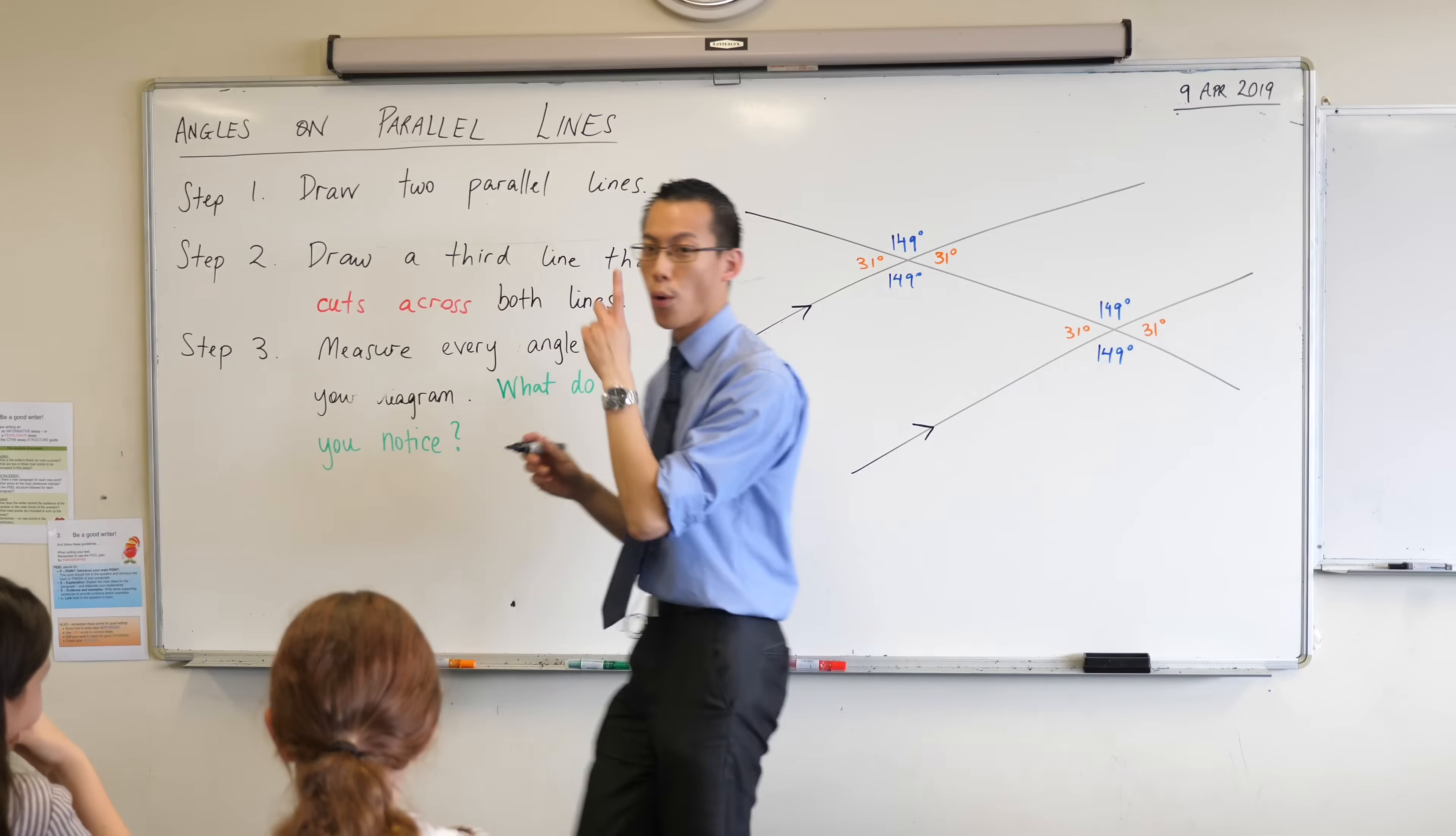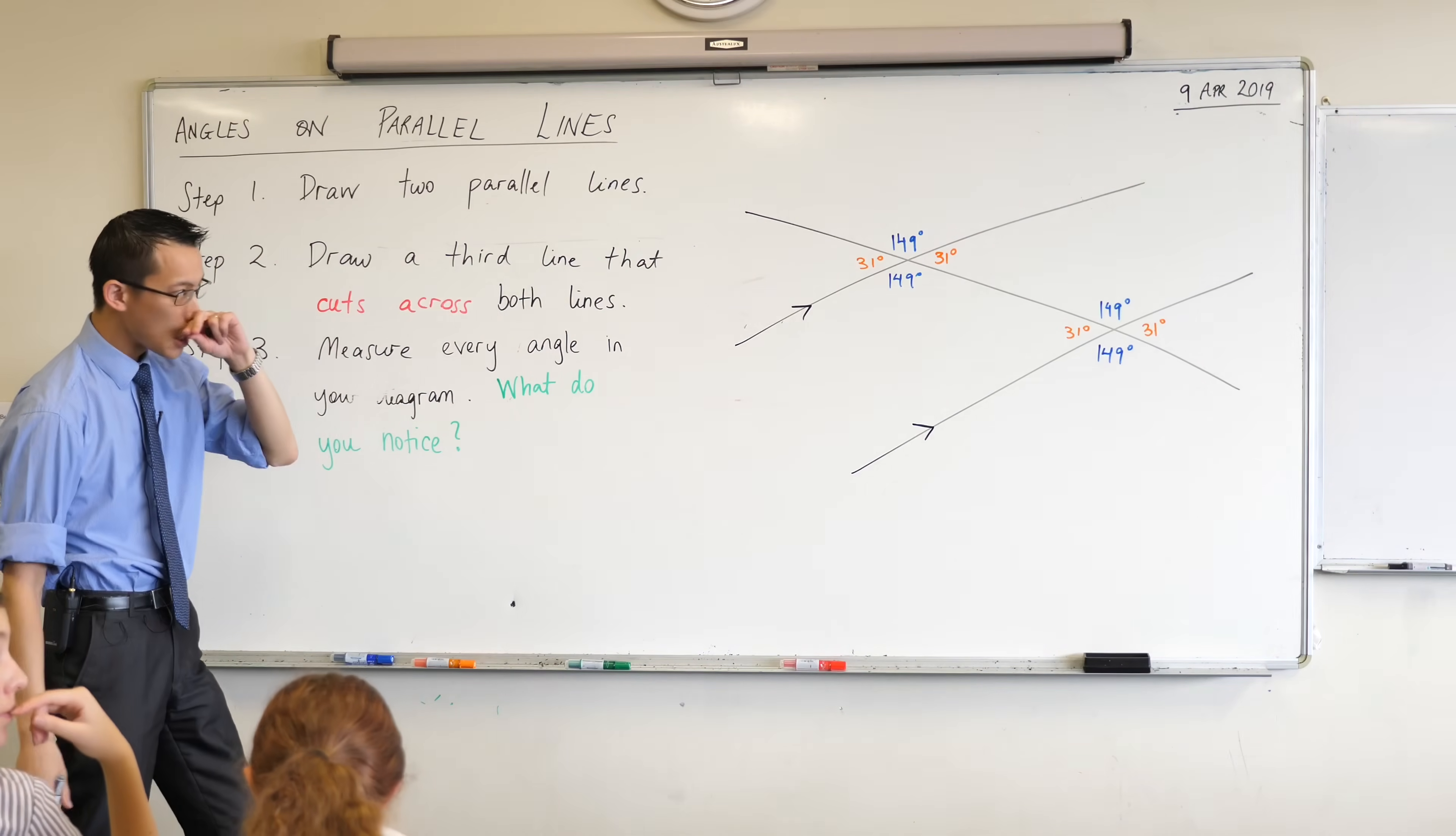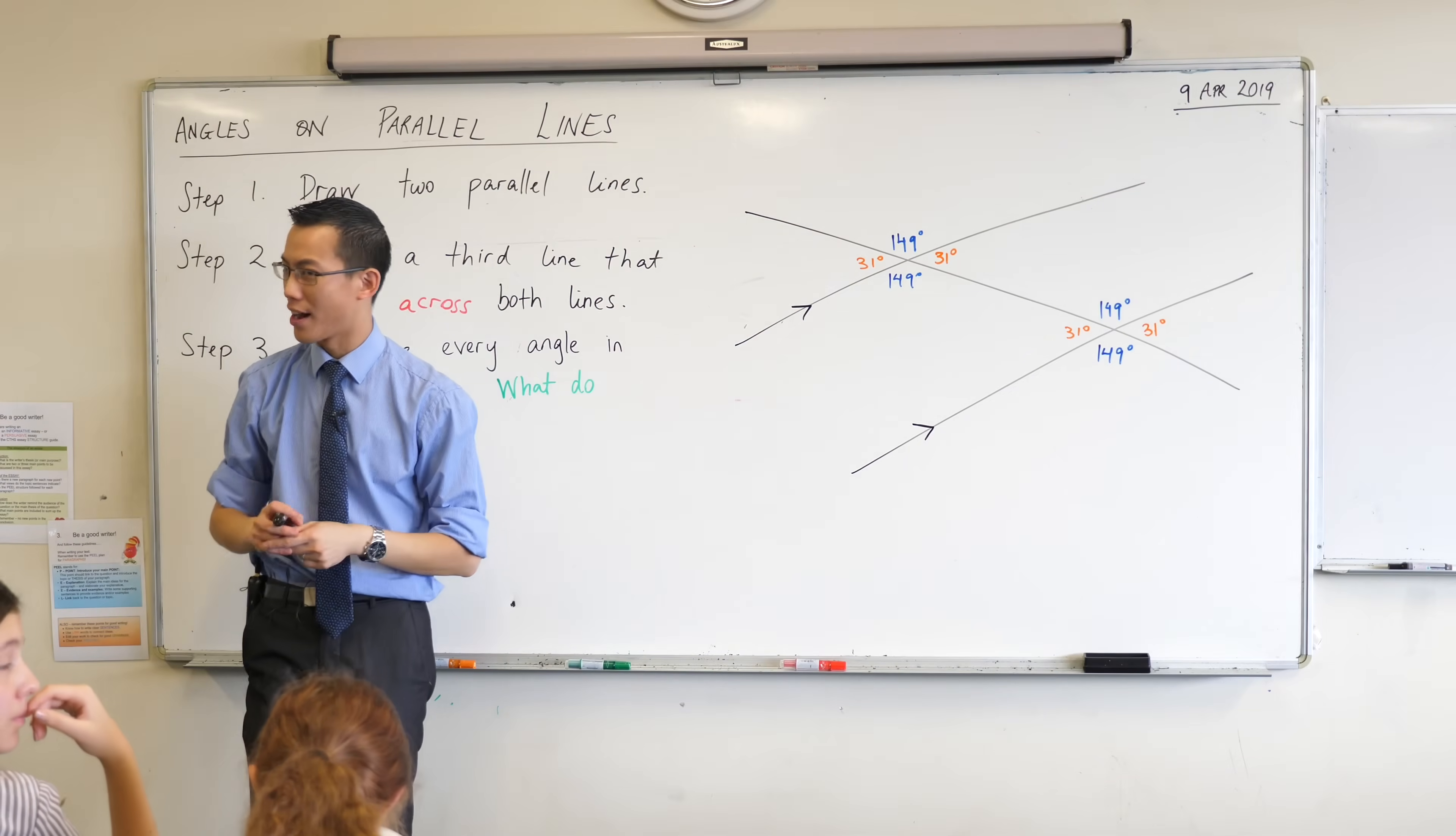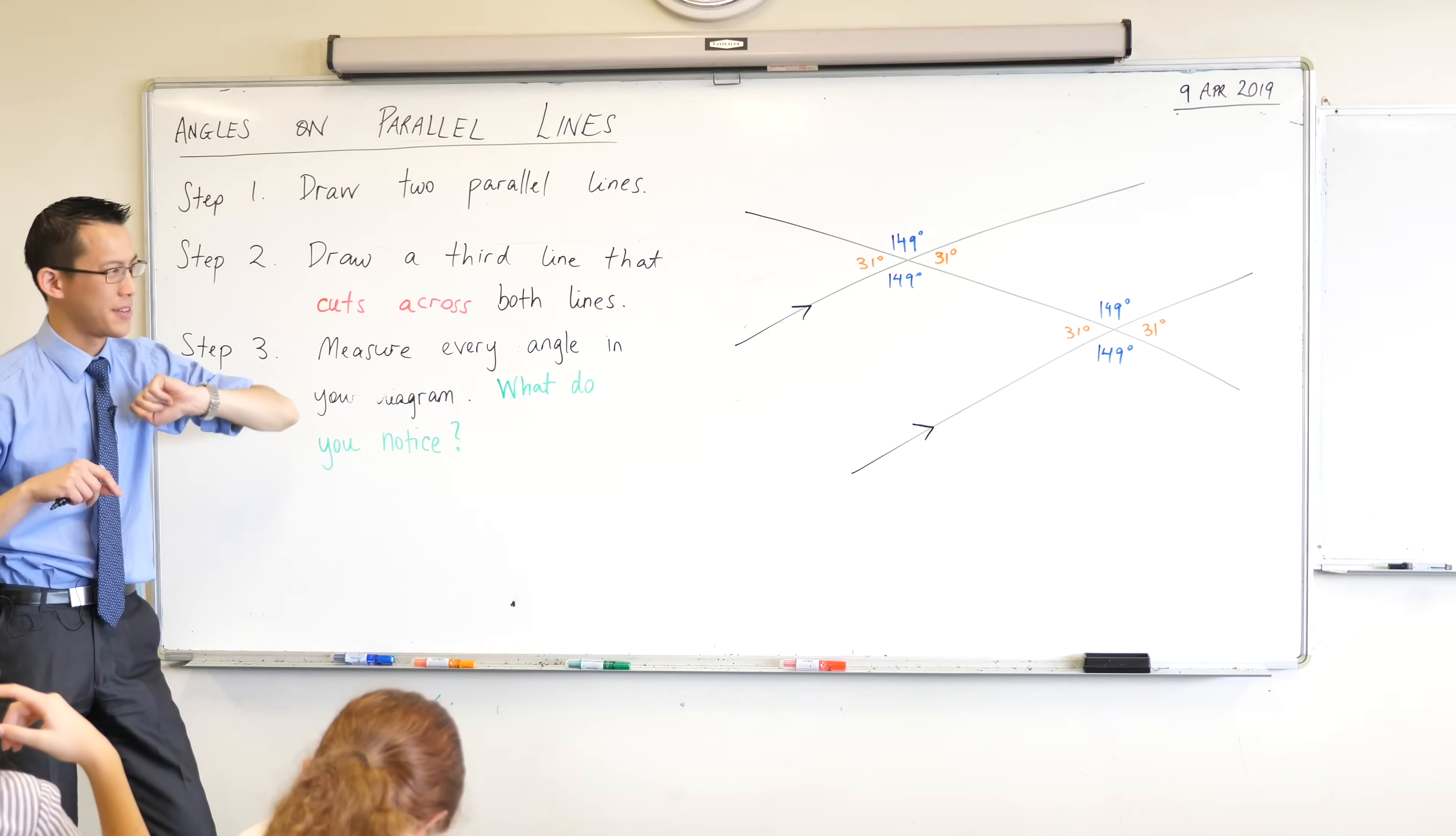Now after that hopefully you've measured all of your angles. I've got eight, probably you've got eight as well. You may or may not have used color, but I use color to indicate some things that are equal and some things that are not. We'll talk about them in a second.